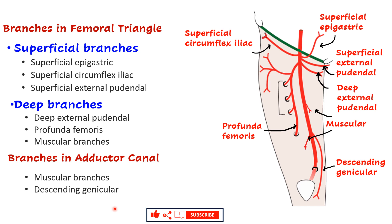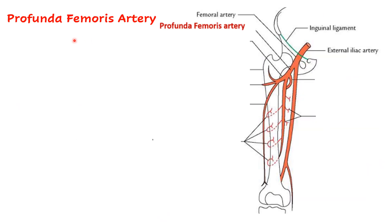To recap, the femoral artery gives three superficial and three deep branches in the femoral triangle, plus two branches in the adductor canal. Let us now consider the branches of the profunda femoris artery.